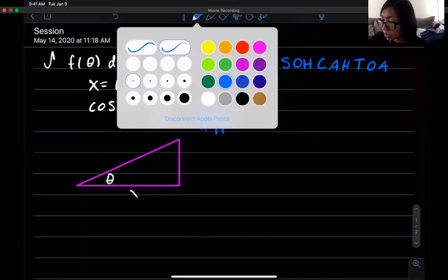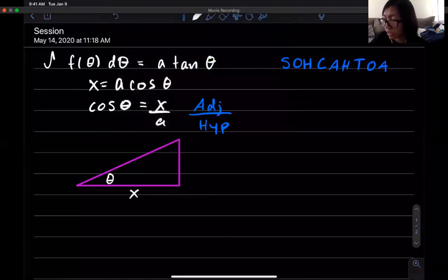Right so that means this side right here is going to be x and the hypotenuse is going to be a. Tangent is the opposite side over the adjacent side but notice how we don't actually have the opposite side so what we can do is we can use the Pythagorean theorem to give us that opposite side.